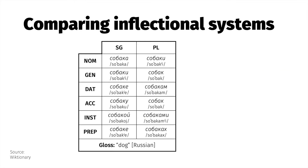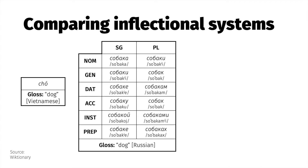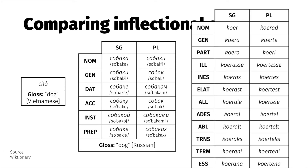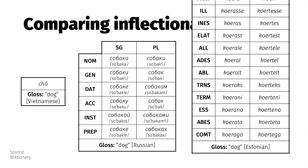Across the world, we find many languages with inflectional paradigms as rich as Russian's. But there are also many languages that get by with no inflection at all. Vietnamese nouns, for instance, make no case or number distinctions. At the other extreme, there are languages like Estonian, whose inflectional paradigms dwarf Russian's.